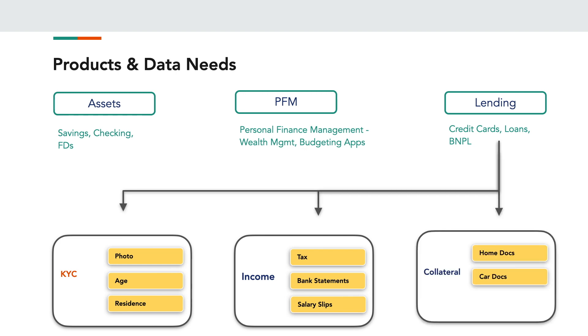In case of lending products, apart from KYC and income information, they also might request collateral information for which the loan is being offered — whether it is for a car loan or a home loan, etc.